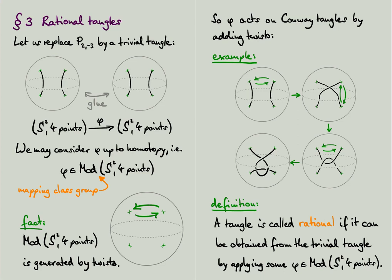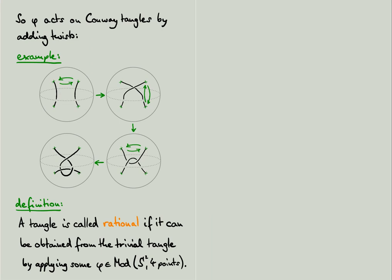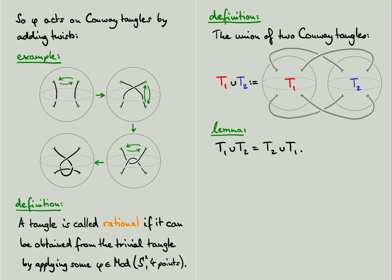Tangles obtained this way are called rational tangles. A tangle is rational if it can be obtained from a trivial tangle by applying some element phi of the mapping class group, in other words by adding twists to the tangle ends. We can now change our perspective on gluing the two trivial tangles together. We fix a particular identification map phi and replace one of the two trivial tangles by an arbitrary rational tangle. In other words, we push all the twists of the map phi into one of the two trivial tangles, so it becomes rational.